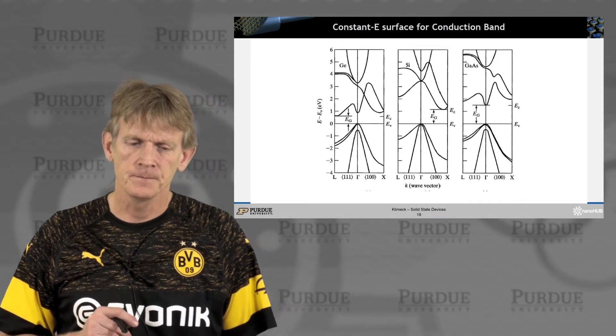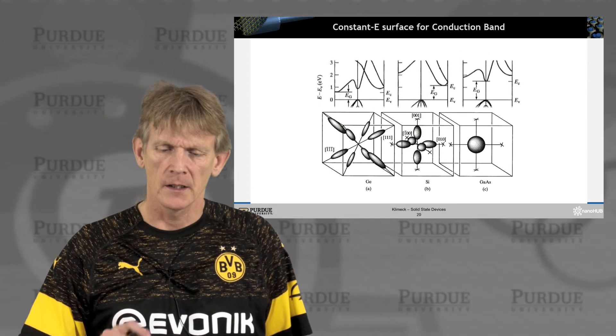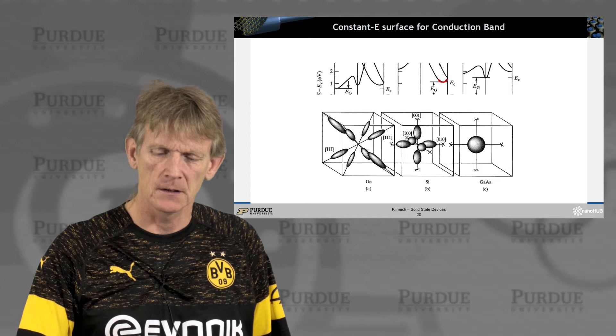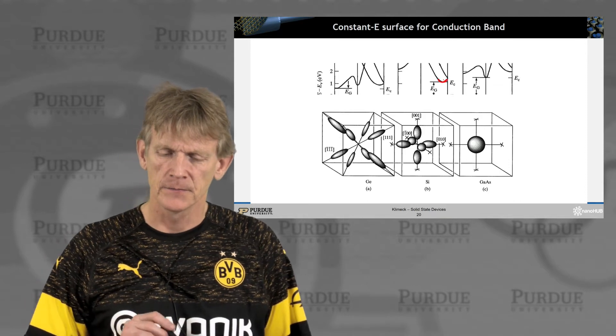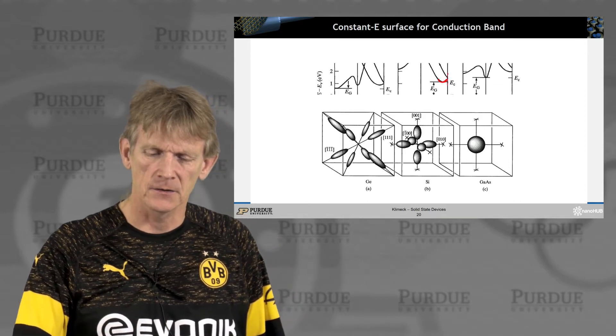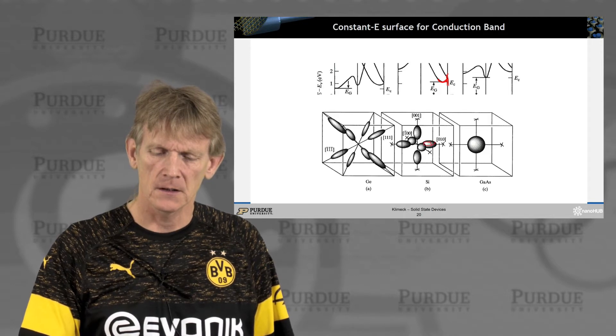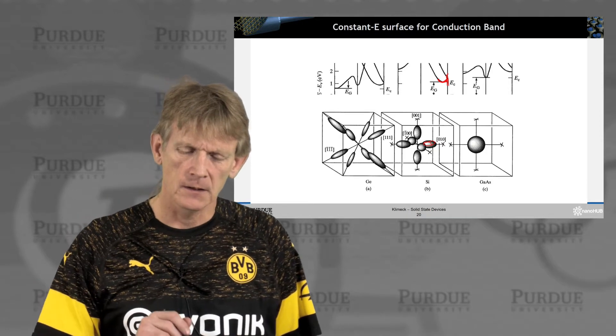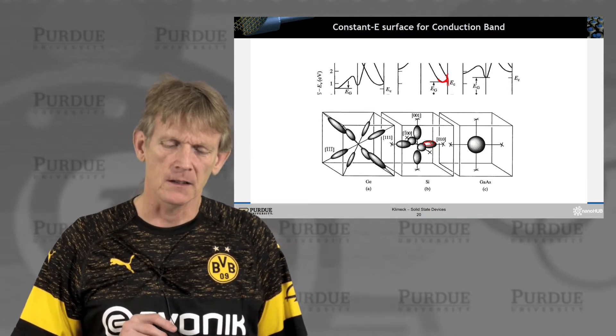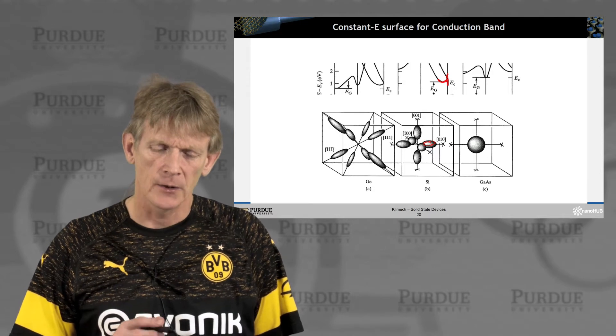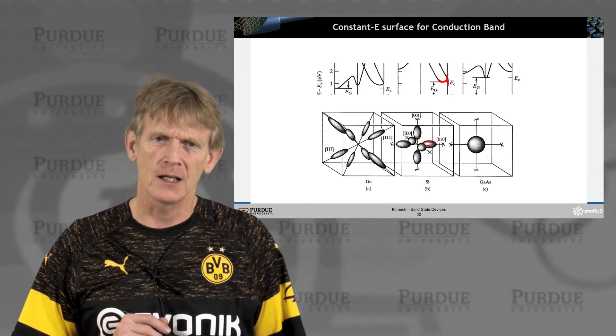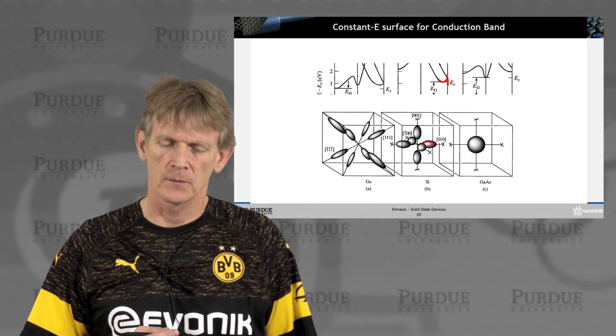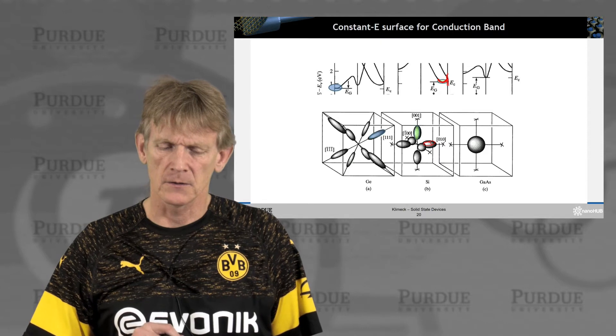Now for silicon, we have something similar, where for silicon we have a minimum point that is on the delta line at x, but it's not exactly at the zone edge. So these ellipsoids are now actually inside the Brillouin zone. Here on the plot for germanium, it's harder to see that, because the Brillouin zone is not being shown, but as I mentioned in the previous slide, only half of the volume of these ellipsoids is inside the Brillouin zone.